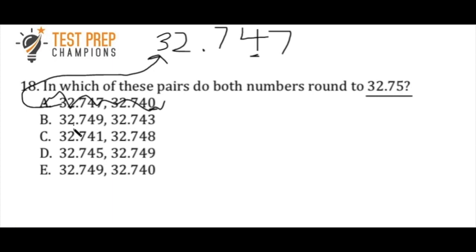Okay, so B, if we look at the first number, we have 32.749. So let's look at the 4, because that's in the hundredths place, and the number directly to the right of it is a 9. Since that's 5 or greater, this number here would round up to 32.75. So the first number in B is correct.